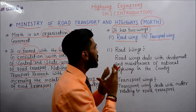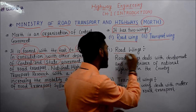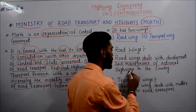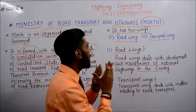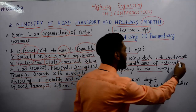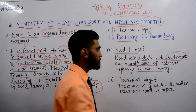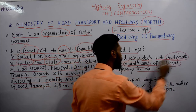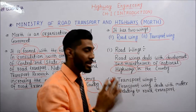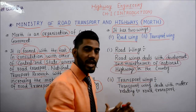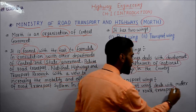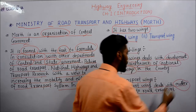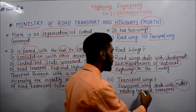Road Wings deals with development and maintenance of national highways in the country. यानि कि Road Wings करता है deal — development यानि विकास के साथ, maintenance यानि सुधार के साथ — परंतु national highways का. Transport Wings deals with matters relating to road transport यानि कि transport wings deal करता है उन मामलों से जो road transport से जुड़े हुए हैं.